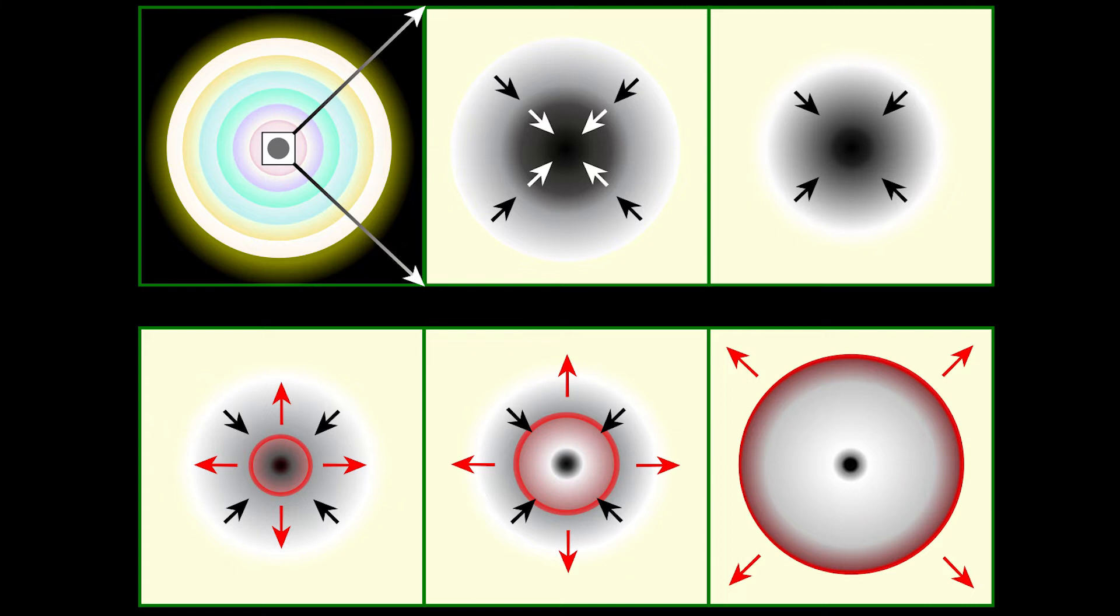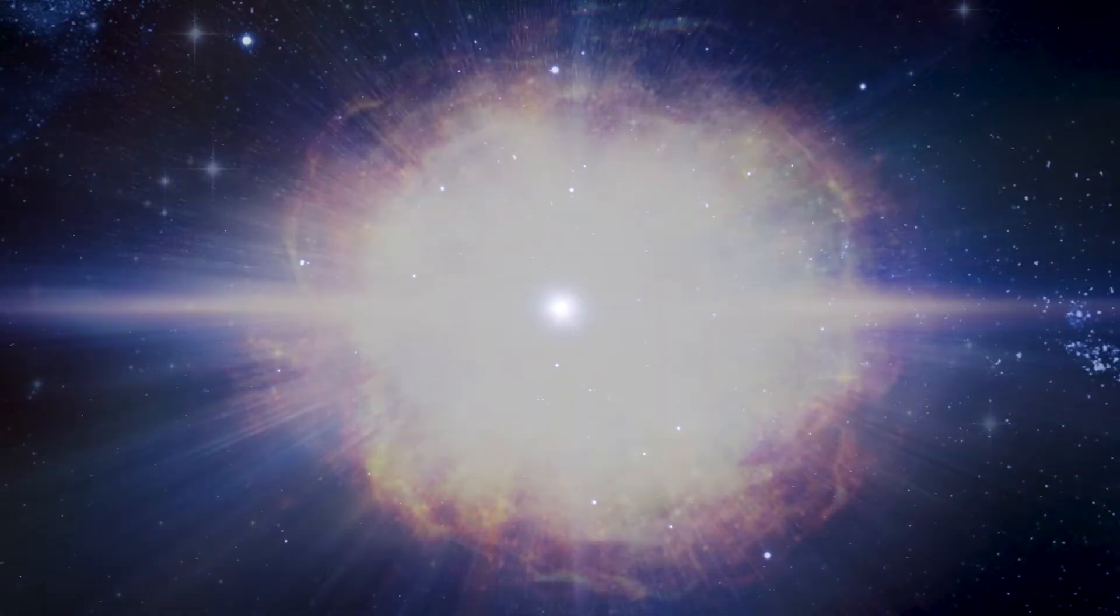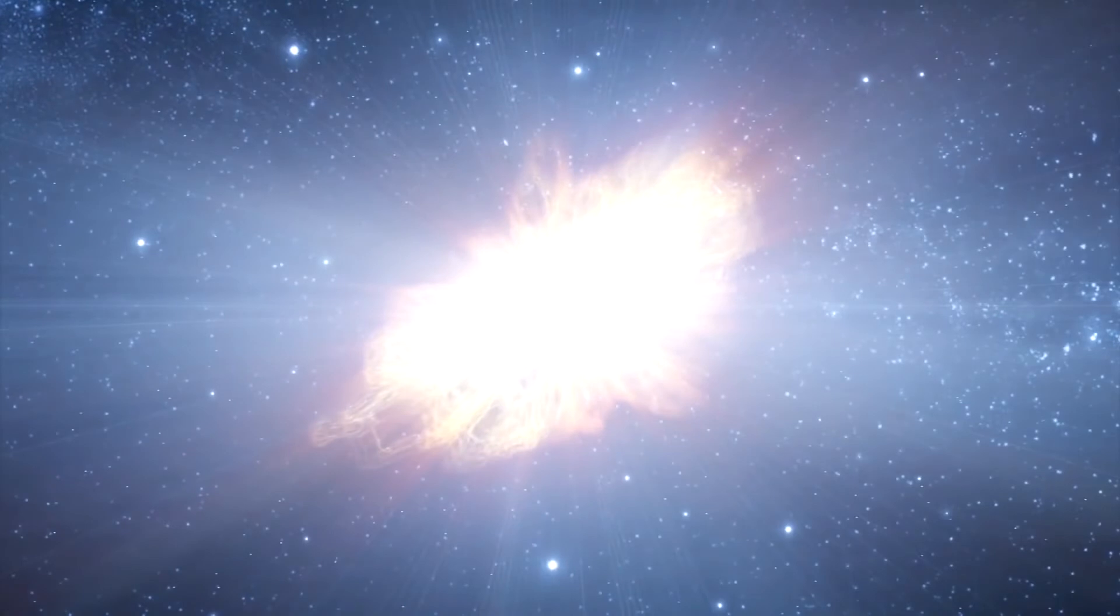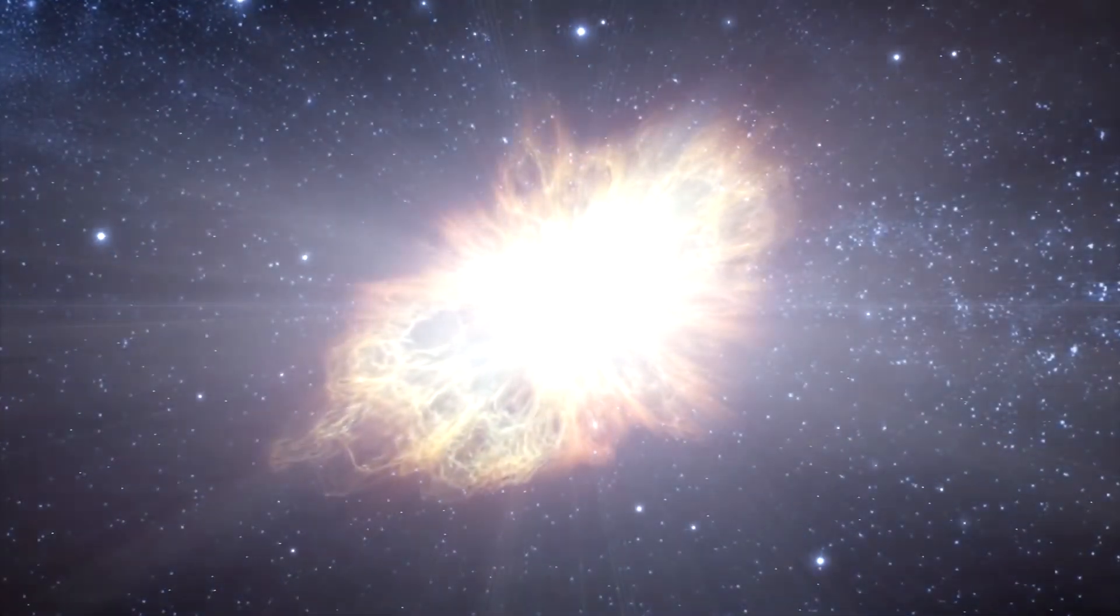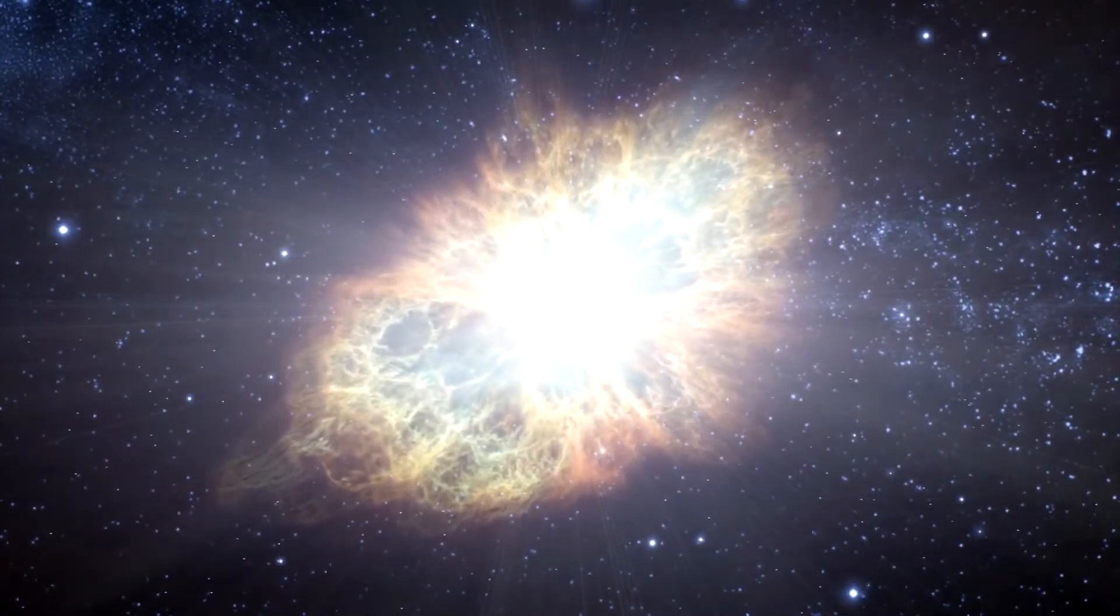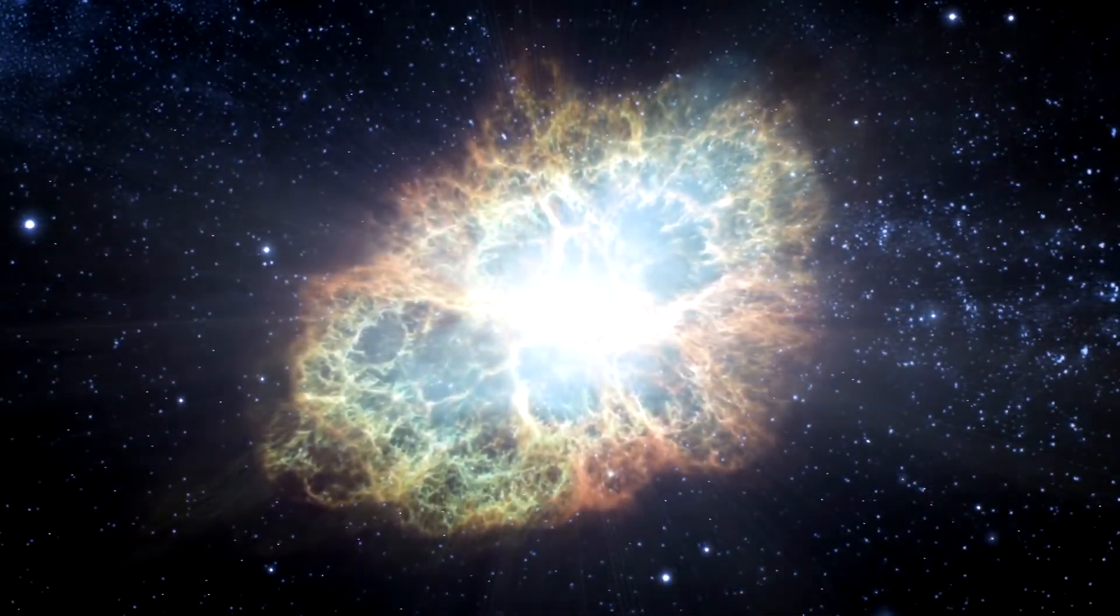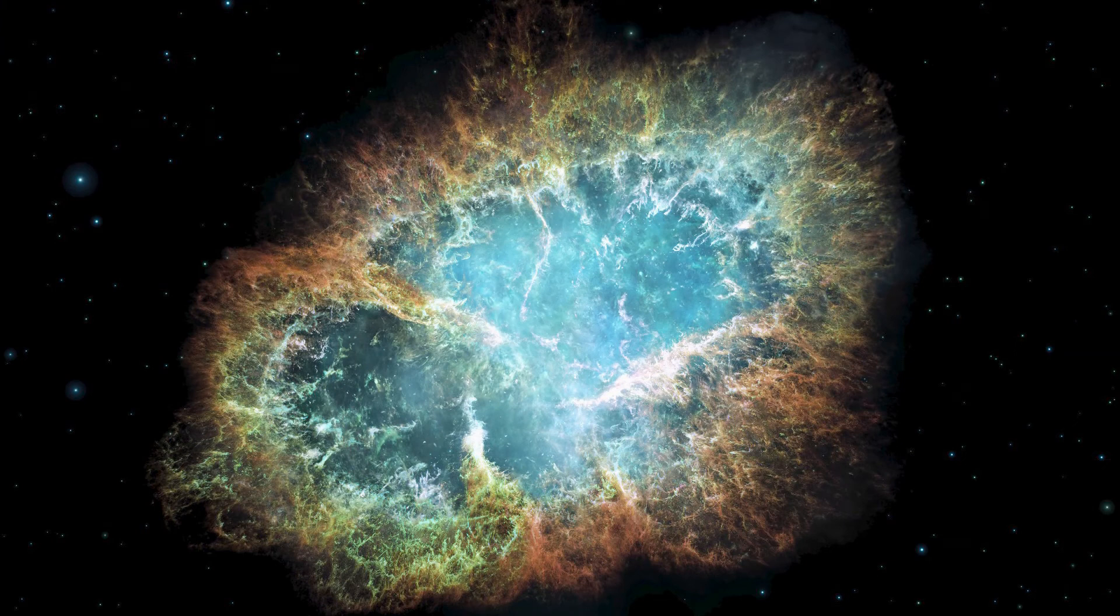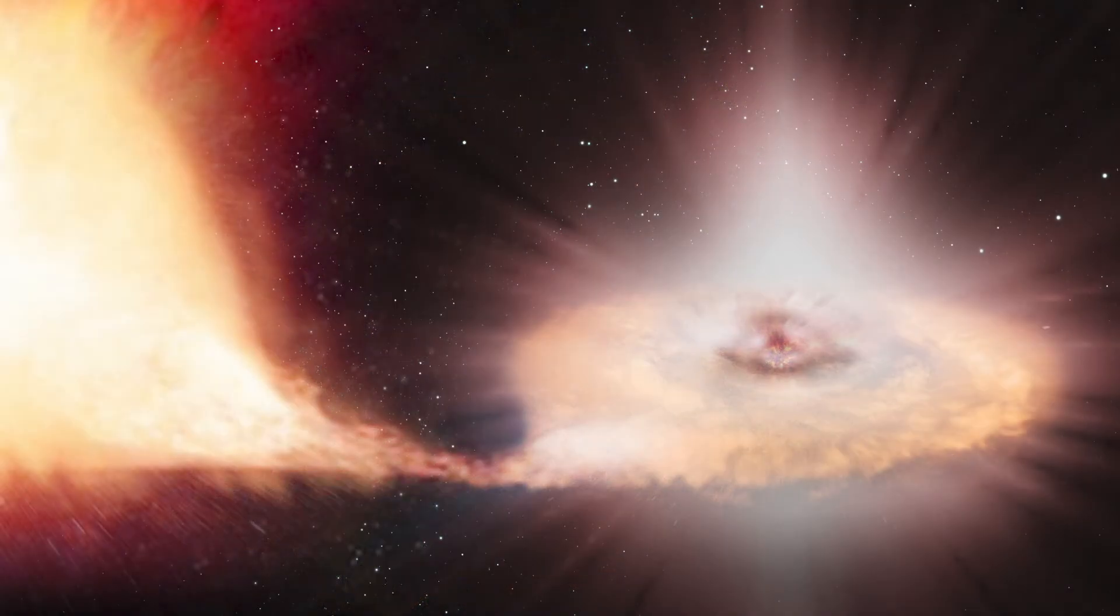The outer layers of the star initially begin to collapse along with the core but rebound with the enormous release of energy and are thrown violently outward. This is called a supernova explosion. Supernovae release huge amounts of energy. For a period of days to weeks, a supernova may outshine an entire galaxy. Likewise, all the naturally occurring elements and the rich array of subatomic particles are produced in these explosions. On average, a supernova explosion occurs about once in every hundred years in a typical galaxy. About 25 to 50 supernovae are discovered each year in other galaxies, but most are too far away to be seen without a telescope.